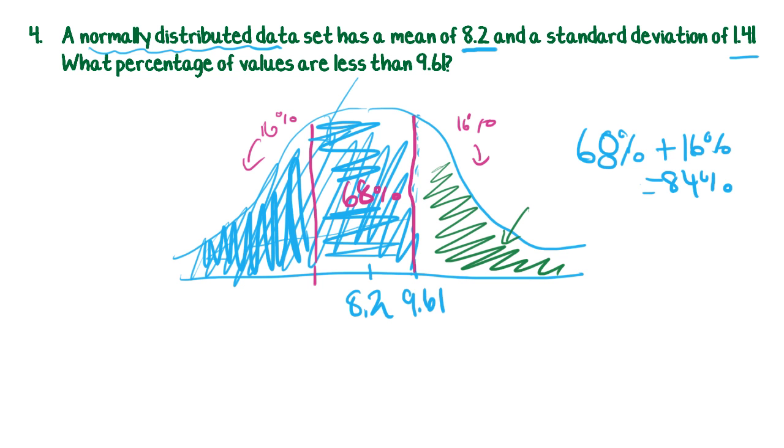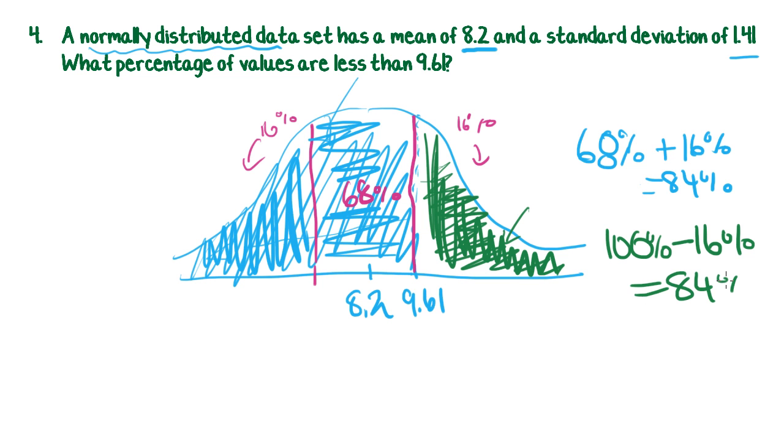If we were doing it this green way, what we would have said is, okay, if there's 68% in the middle, there must be 16% in this tail. So we'll just say, okay, it's the whole thing minus that leftover tail. So it's 100% minus 16%, which is 84%. Either way, you get to the same answer.